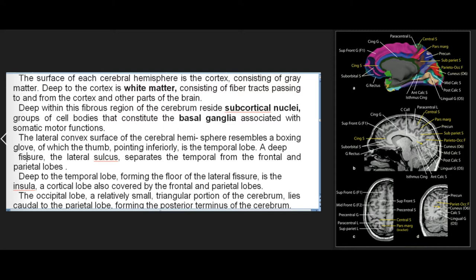Deep within the fibrous region of the cerebrum reside subcortical nuclei — groups of cell bodies that constitute the basal ganglia, associated with somatic motor functions. The lateral convex surface of the cerebral hemisphere resembles a boxing glove, of which the thumb pointing inferiorly is the temporal lobe. A deep fissure, the lateral sulcus, separates the temporal from the frontal and parietal lobes. Deep to the temporal lobe, forming the floor of the lateral fissure, is the insula, a cortical lobe also covered by the frontal and parietal lobes.